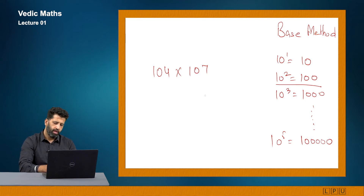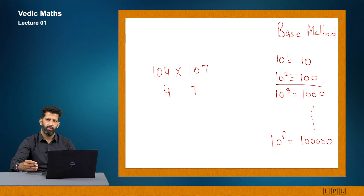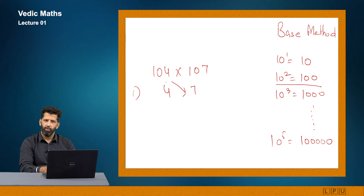For 104 × 107 with base 100: first find the differences from the base. The difference of 104 from 100 is plus 4, and the difference of 107 from 100 is plus 7. In the second step, either add 7 to 104 or add 4 to 107 — both give the same answer. So 104 plus 7 gives 111. This is the left part of the answer.